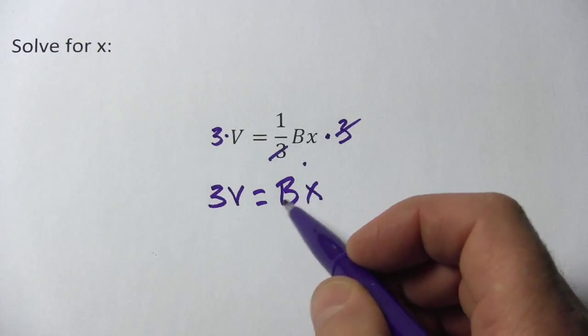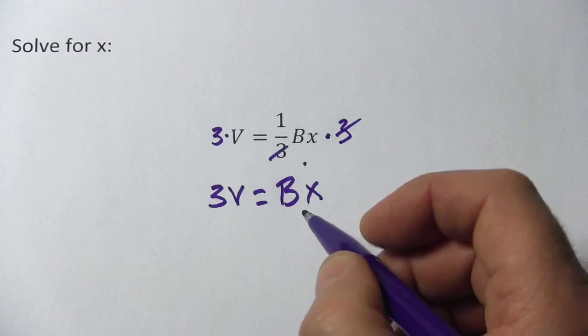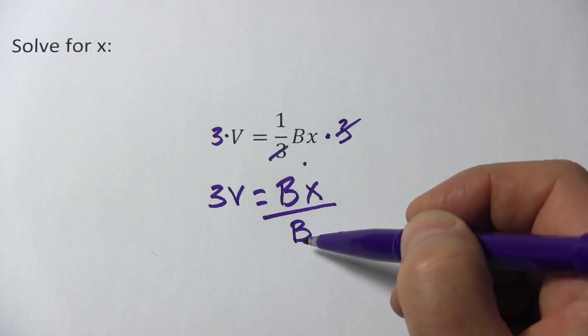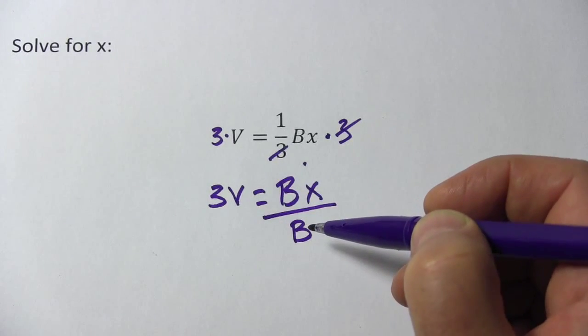Now, the only thing being done to x is it's being multiplied by B. So we're going to divide by B. You know, if this had a number over here, 8, you would just divide by 8. With the B, it's the same thing.